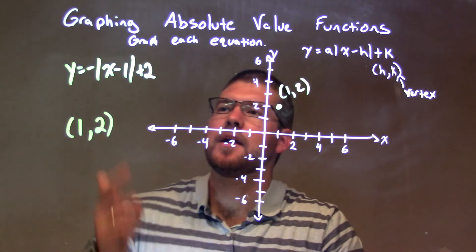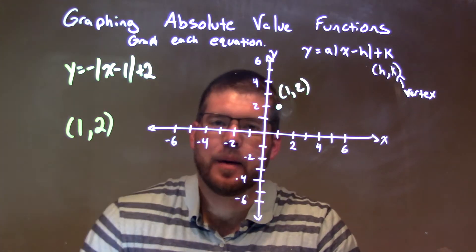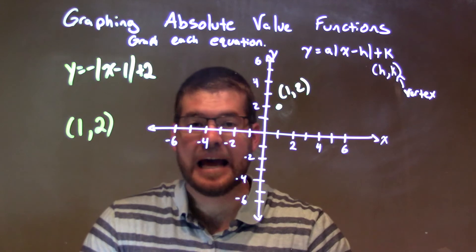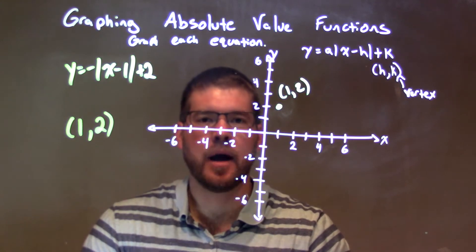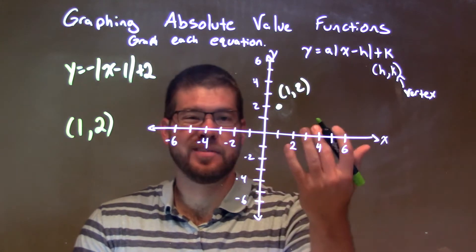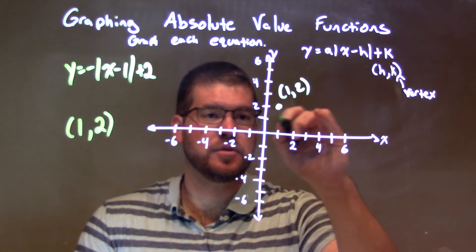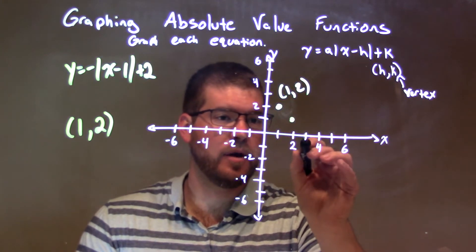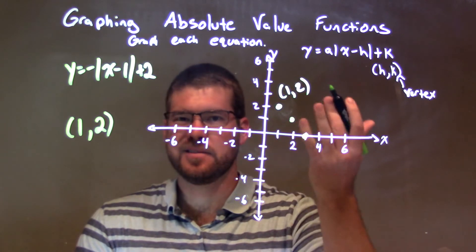Then we look at the a value. That's in front of the absolute value right there. That's a negative 1. Negative tells me it's an upside down v, or like a roof shape, and the slope is just negative 1. So we go down 1 to the right 1, down 1 to the right 1. Do the same thing to the left.